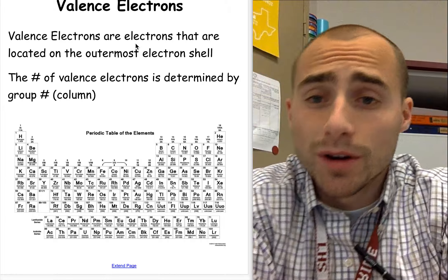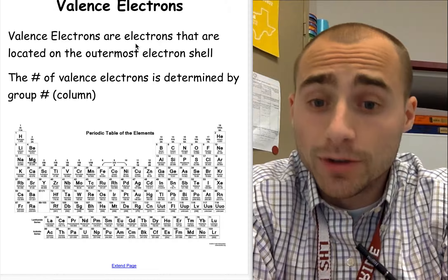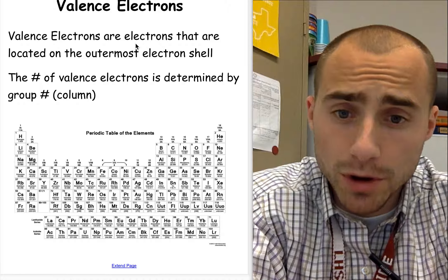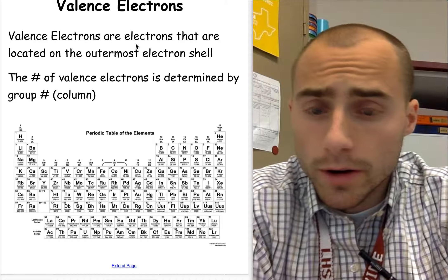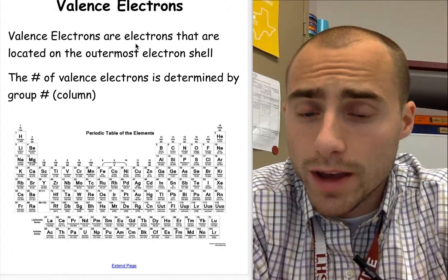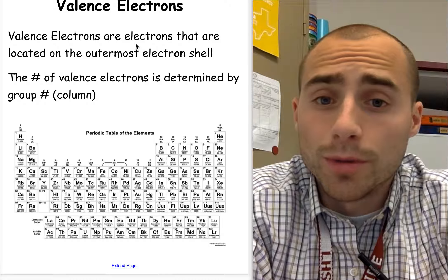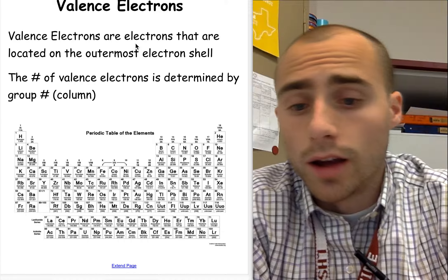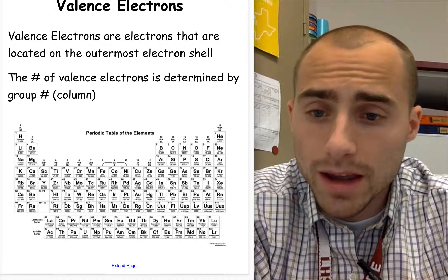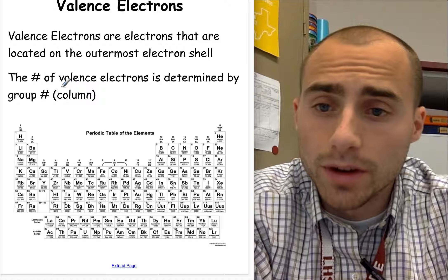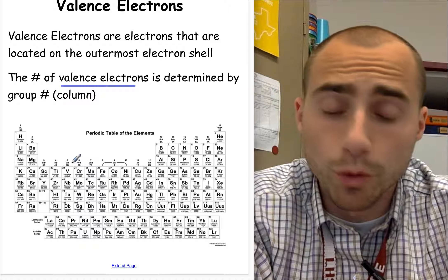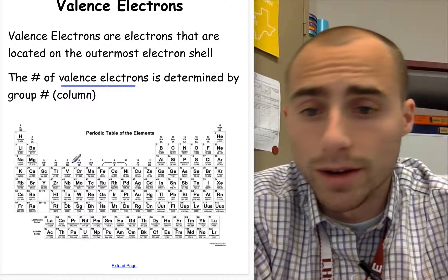This video is going to be about ions. We are going to start off with just a quick recap of valence electrons — I'll introduce those briefly earlier in the unit — but valence electrons are the electrons that are located on the outermost shell of an atom. We determine the number of valence electrons based upon whichever group or column the atom is in.